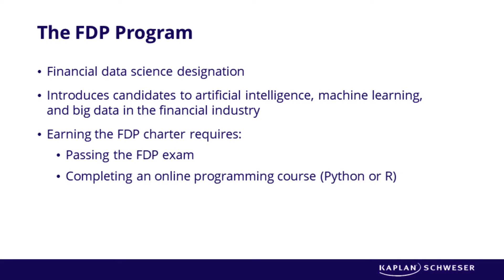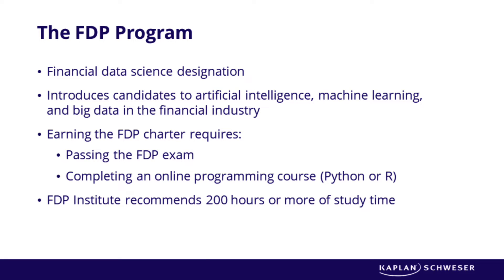To earn the designation, candidates must pass the FDP exam and demonstrate a basic understanding of either the Python or R programming language. The online programming course can be completed either before or after your exam sitting. It is recommended that candidates spend 200 or more hours preparing for this exam; however, study time will vary based on your background and experience.